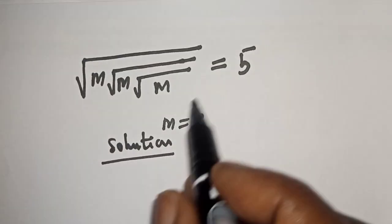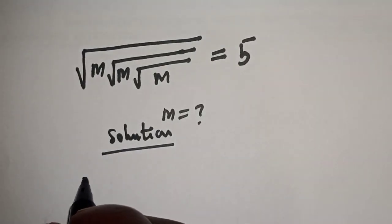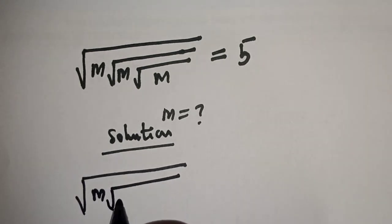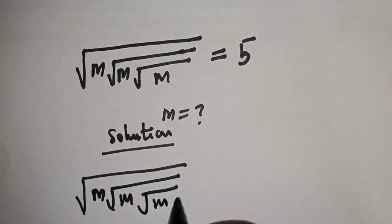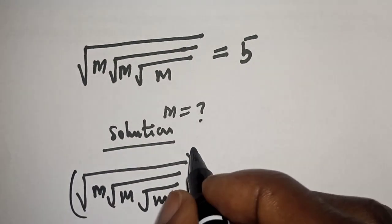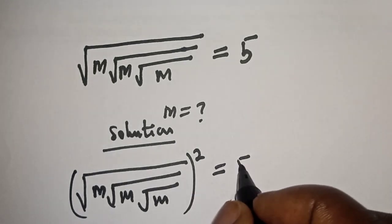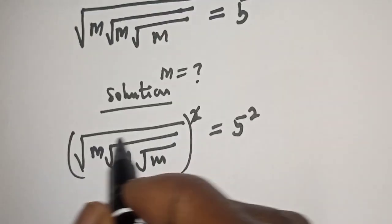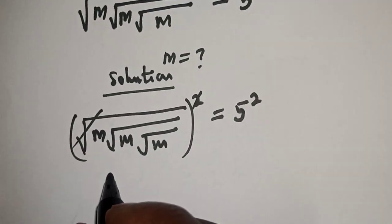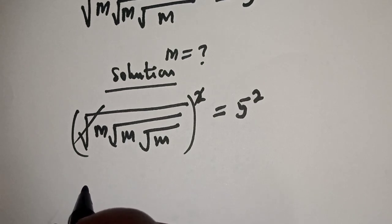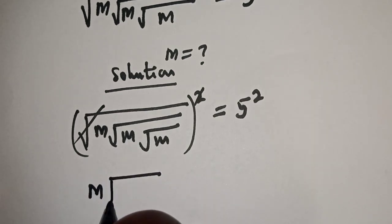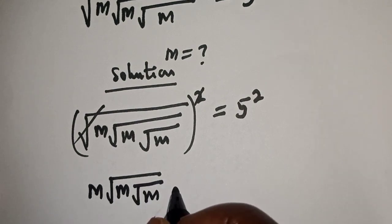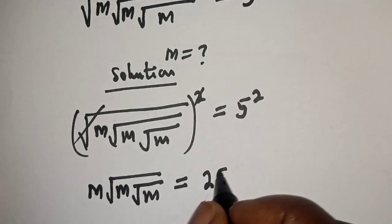Let's square both sides of this equation. Square root of m times square root of m, all squared, is equal to 5 squared. If we square this, we cancel the square root, and we have m times square root of m times square root of m is equal to 5 squared, which is 25.